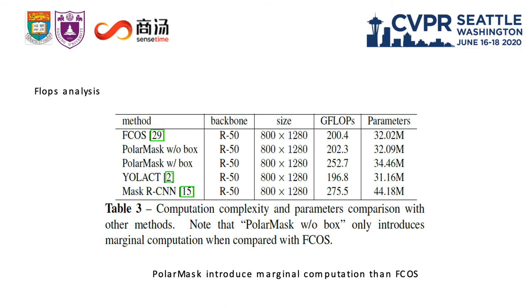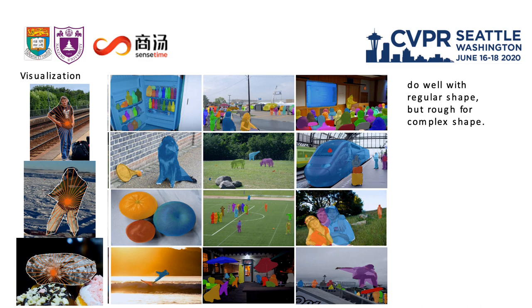Here is the FLOPs analysis. We can see that PolarMask introduces only marginal computation compared to FCOS, which proves that our method is almost as simple as object detection.